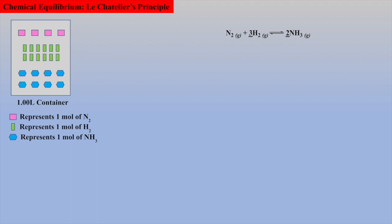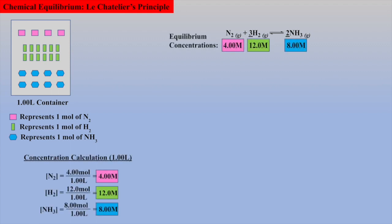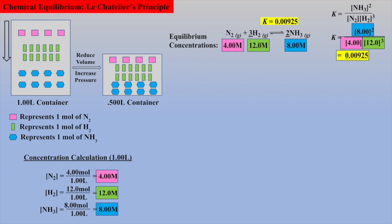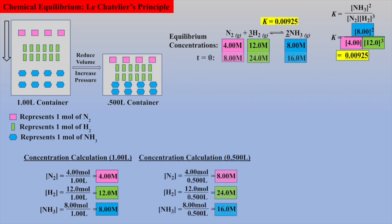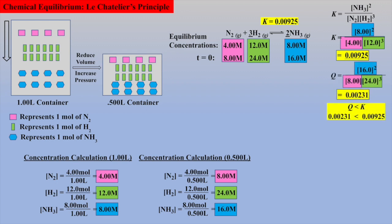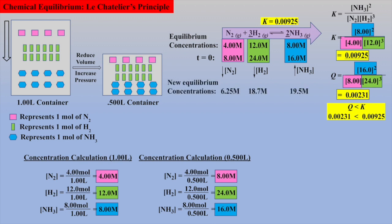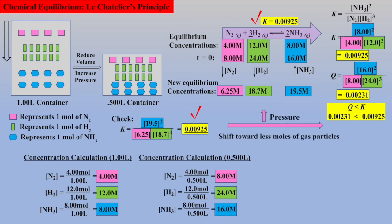Here we have the Haber reaction in a 1-liter reaction vessel at equilibrium, where each particle of gas represents 1 mole. Thus, the equilibrium concentrations are 4, 8, and 12 molar for nitrogen, hydrogen, and ammonia, respectively, and a K value can be calculated using these concentrations. If the volume is reduced to half a liter, the new concentrations can be calculated as well as a Q value. The Q value is less than K, thus the equilibrium will shift to the right, causing a decrease in concentration of the reactants and an increase in concentration of ammonia. When the system reaches equilibrium in the half-liter reaction vessel, the reactant concentrations did decrease and the product concentration did increase, which matched the given K value. This confirms Le Chatelier's prediction that the system shifts toward less moles of gas when volume is reduced or pressure is increased.